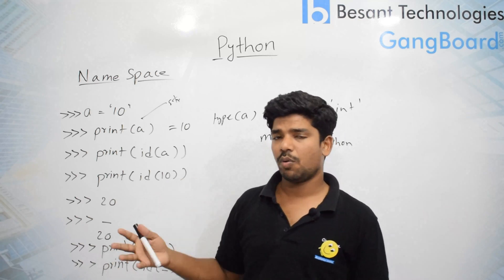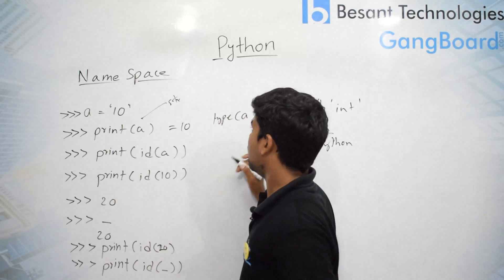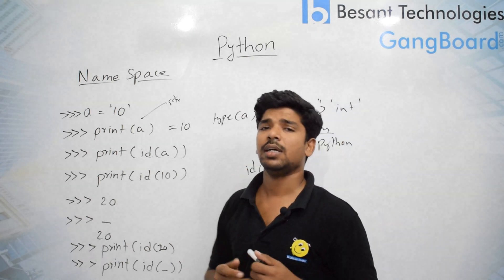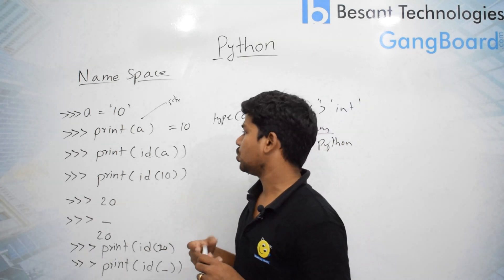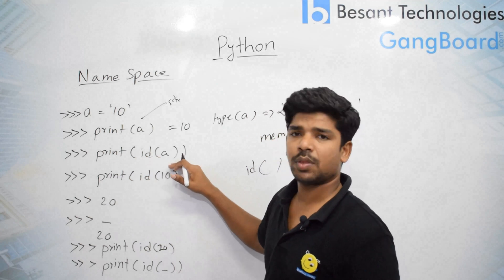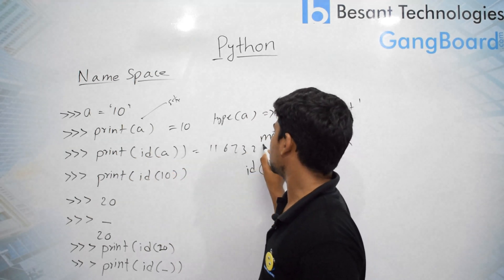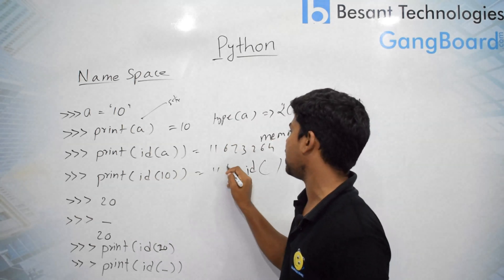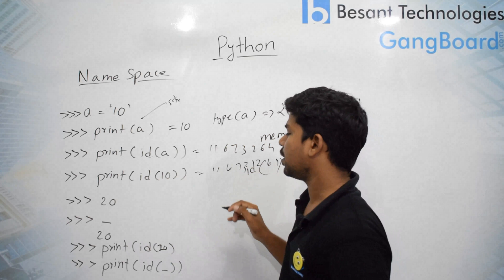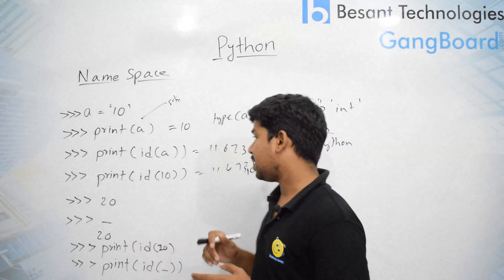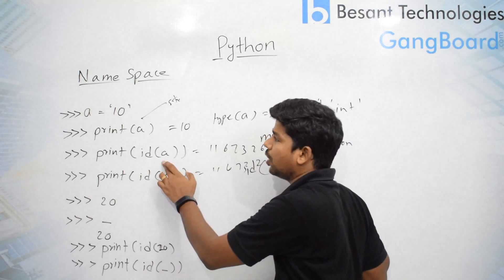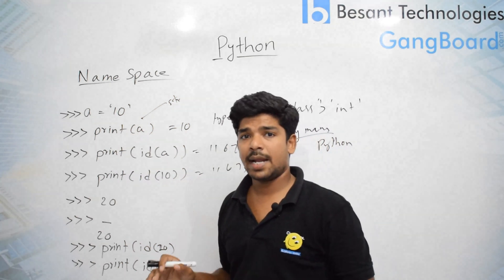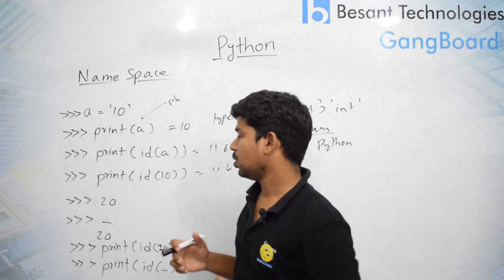We have the id() function under namespace which will give the address of the value. So if you do print(id(a)) it will give you a sequence of numbers which is called an address. If you do print(id(10)) you will get the same number. That means the address is for the value, not for the variable. If you change the value, it will get a new address.